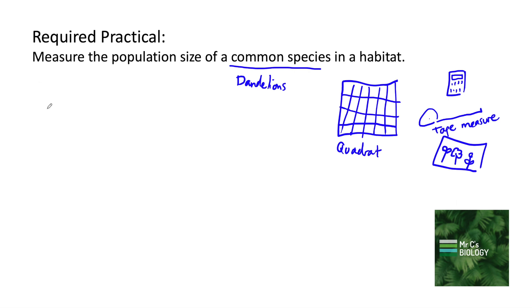In terms of method there are two main methods. We're going to start off by talking about random sampling and then we'll talk about sampling along a transect.